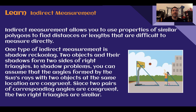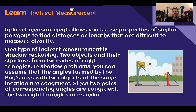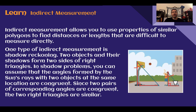One type of indirect measurement is shadow reckoning. Two objects and their shadows form two sides of a right triangle. Here we have the height and the shadow of the basketball hoop, and the person's height and their shadow. In shadow problems we can assume the sun's rays hit the objects at the same angle. Since two corresponding angles show similar triangles — we already know one is a right angle — the sun's angle must be the same for both, making these two triangles similar. We can use the measurements of one triangle, like the kid's height and shadow, to figure out the height of the basketball hoop.